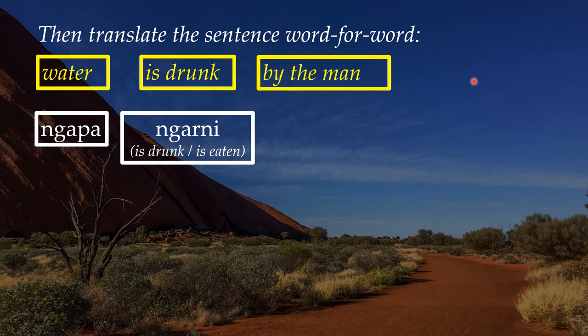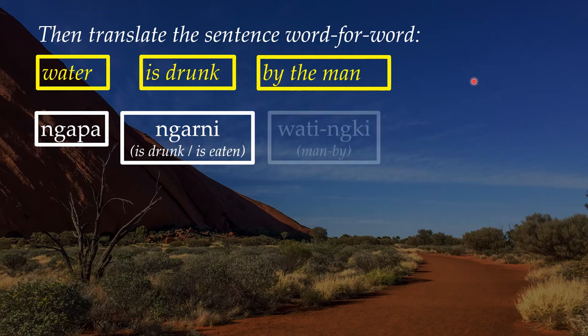So 'ngapa, ngarni, wadi-nge.' The '-nge' means 'by' — it's the ergative suffix. The action is done by the man. So if I say 'Peter saw Jane,' it would be 'Jane was seen by Peter' — the 'by' here would be the '-nge.' So 'wadi-nge' means the action is done by the man.